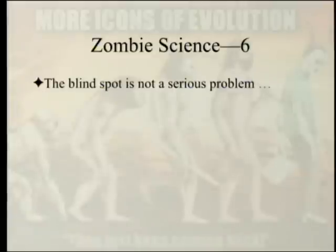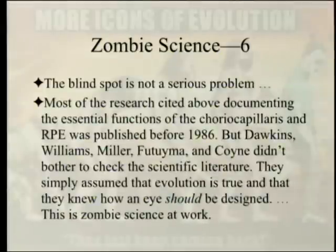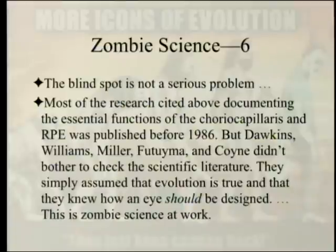The blind spot is not a serious problem, primarily because it's covered over by everything else — if you don't study physiology, you don't even know about the blind spot. Most of the research documenting the essential functions of the choriocapillaris and RPE was published before 1986, but Dawkins, Williams, Miller, and Futuyma didn't bother to check the scientific literature. They simply assumed that evolution is true and that they knew how an eye should be designed. This is zombie science at work.